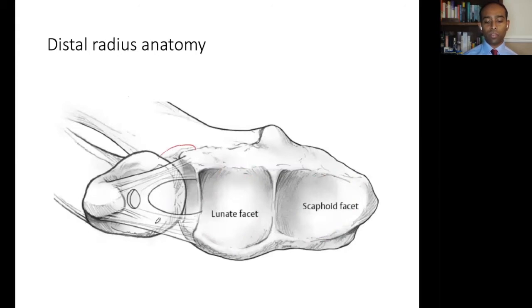The sigmoid notch can be seen as the point of articulation for the ulnar head and key to forearm rotation. This structure represents the triangular fibrocartilage complex, or TFCC, which articulates with the triquetrum, as well as providing stability to the distal radioulnar joint.